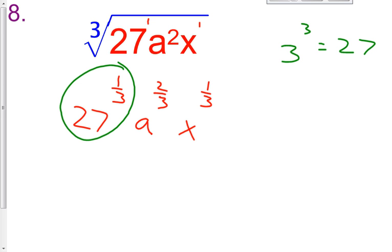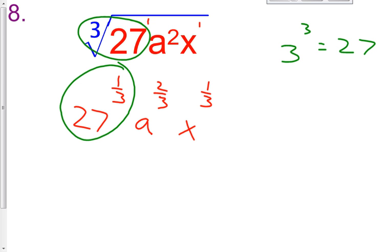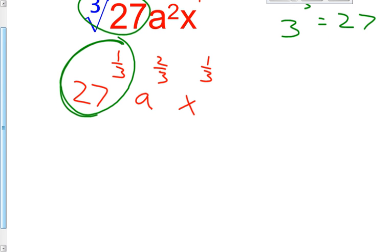So 3 cubed is 27. So when we say the cubed root of 27, we've got to ask ourselves the question: what number times what number times what number equals 27? Well, 3 times 3 times 3 is 27. So this can be simplified. 27 raised to the 1 third is 3.